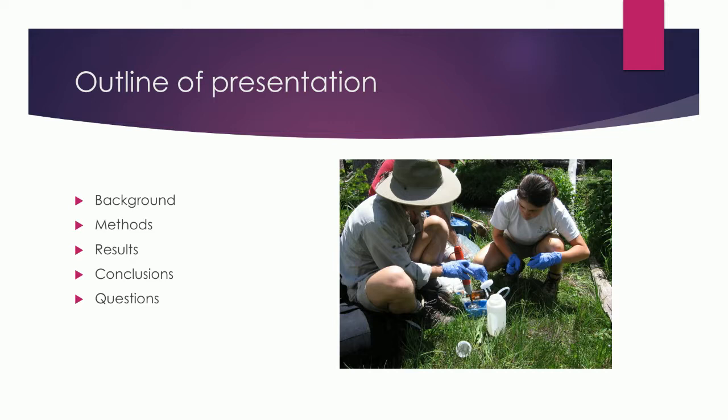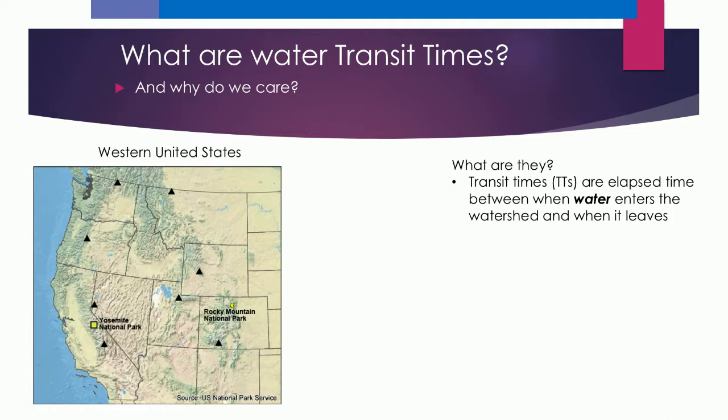This is an interdisciplinary session, so I thought it would be useful to describe what transit times are — the transit times of water. That is, what is the elapsed time between when a water molecule enters the watershed, say a raindrop hits the ground, and how long does it take for that raindrop to move through the catchment to the outlet of the watershed, which is often a stream gauge?